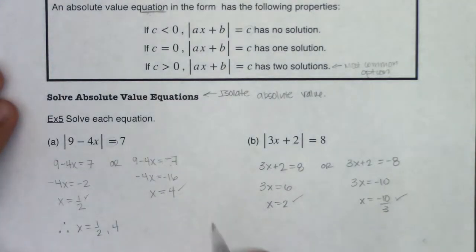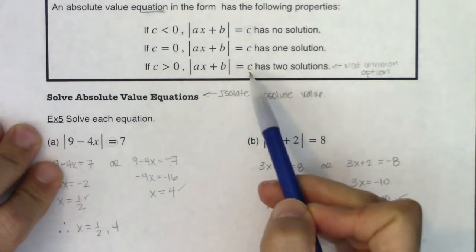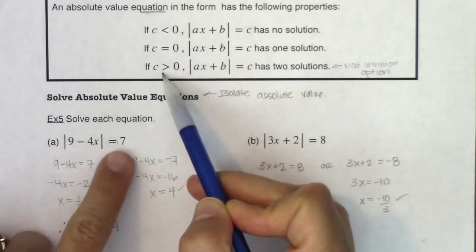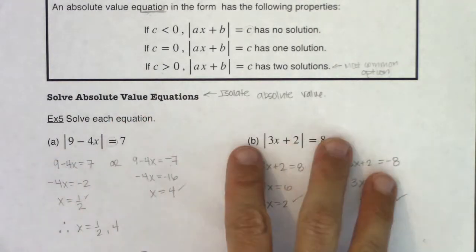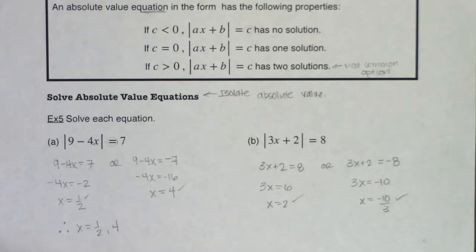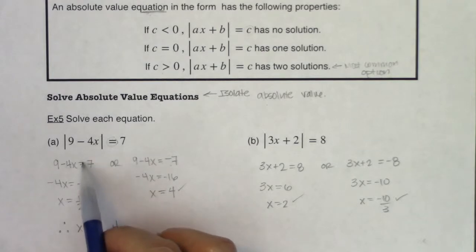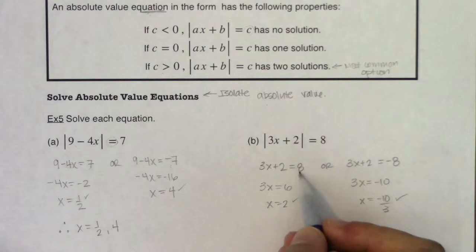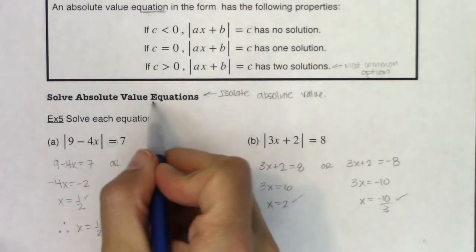Where we've been so far — we still have examples c through f to look at. Both examples a and b had a positive number on the right side of the equation, since 7 and 8 are both greater than zero. We're going to look at four more examples mixing all three options. Isolate the absolute value, and if you have the equal sign, set it equal to the number on the right and its opposite.